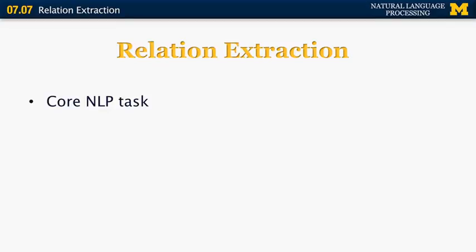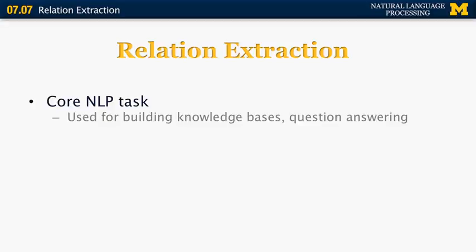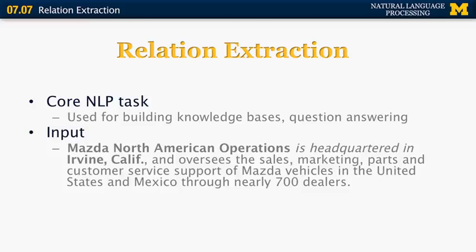Relation extraction in general is a very important core NLP task. It's used for building knowledge bases, for question answering, and so on. Its input is given a sentence. For example, Mazda North American Operations is headquartered in Irvine, California. And the output is supposed to be a tuple that consists of the organization, in this case, Mazda North American Operations, a location, in this case Irvine, California, and then the label for the relations, specifically in this example, is headquartered in.